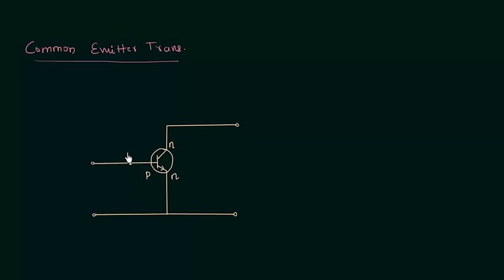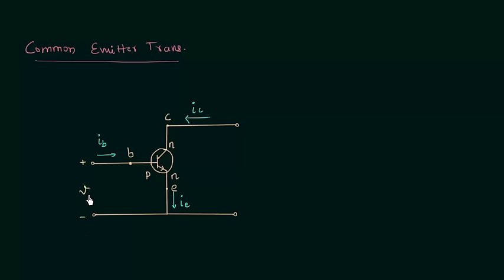This is the base terminal, represented by small b. This is the collector terminal, represented by small c, and this is the emitter terminal, represented by small e. The input current is the base current, represented by i subscript b. The output current is the collector current, and the emitter current also flows here. The input voltage is V_BE and the output voltage is V_CE.